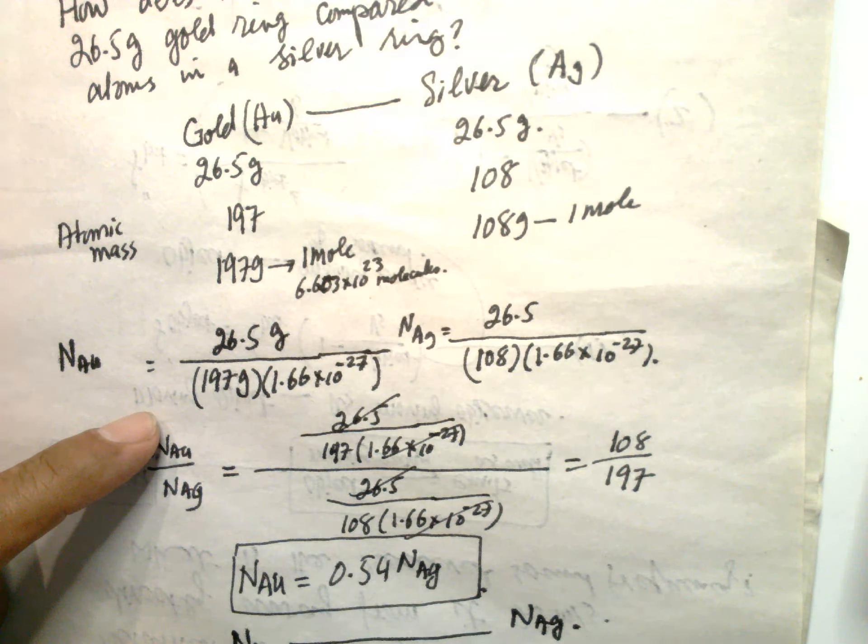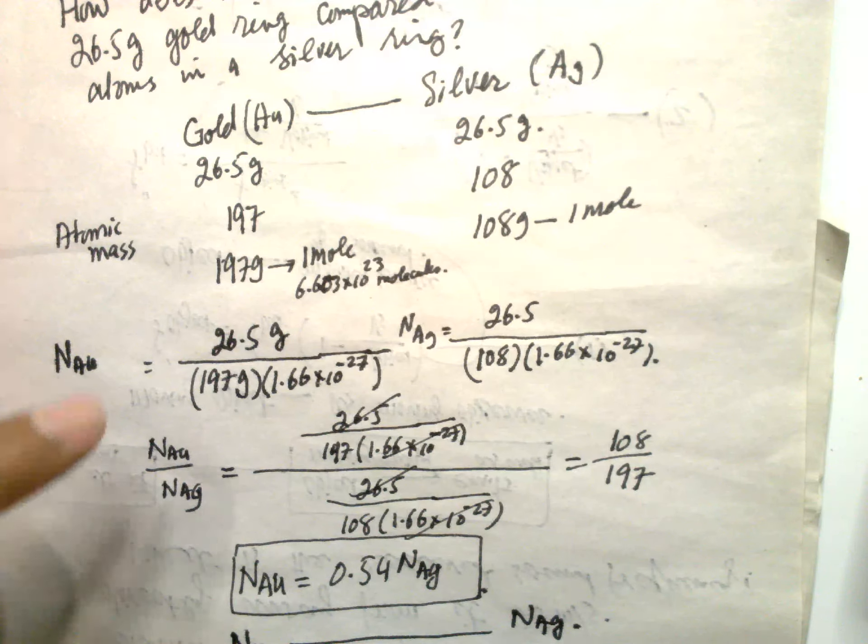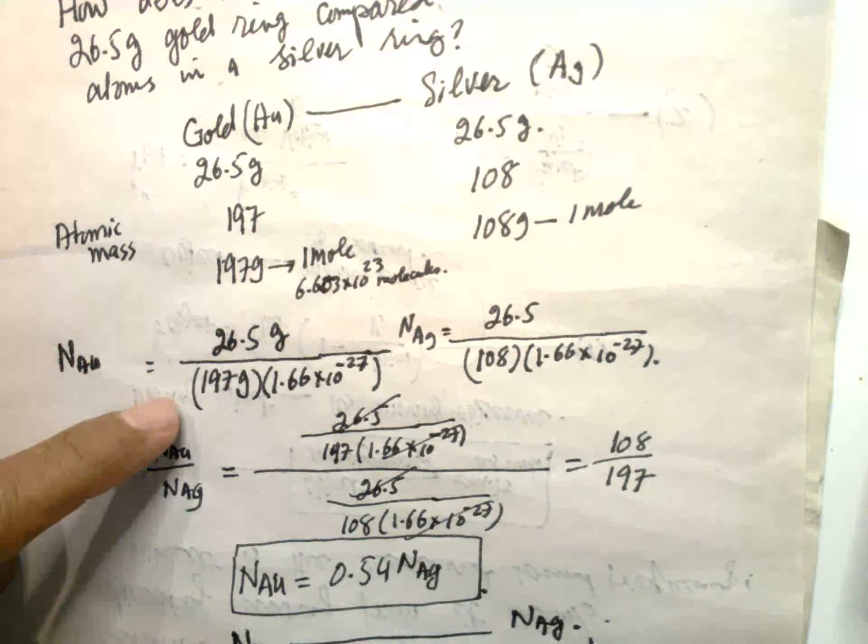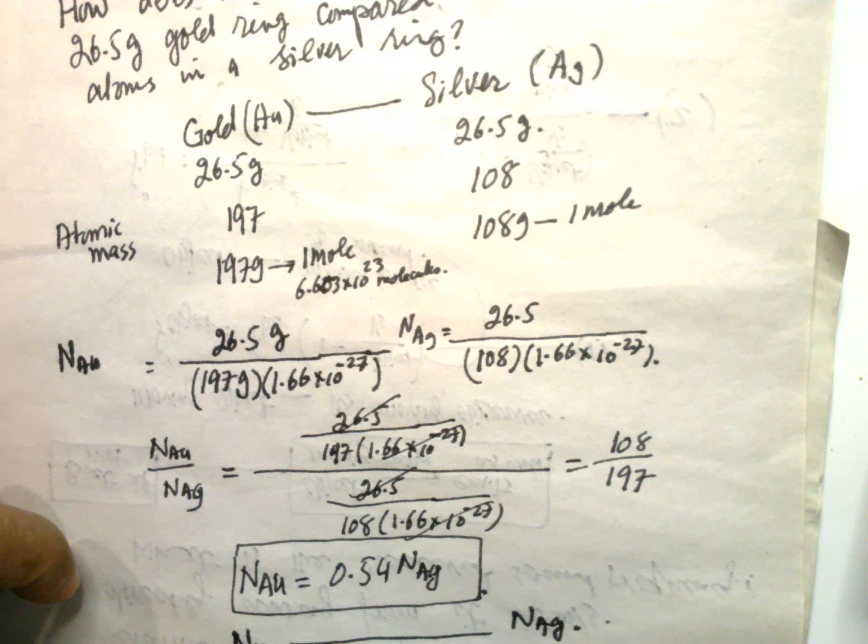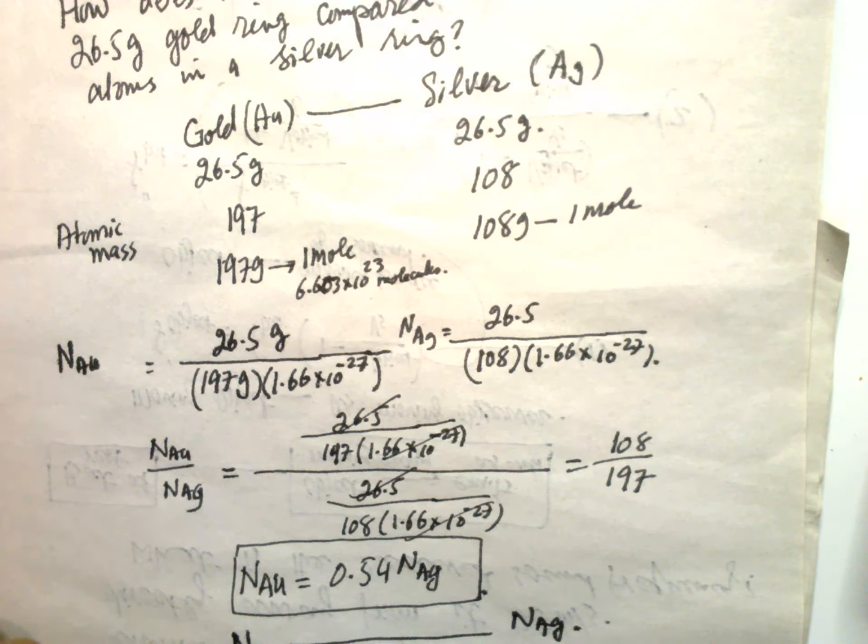Gold has 54% as many atoms as silver. So there will be more silver atoms. That is the answer. Okay.